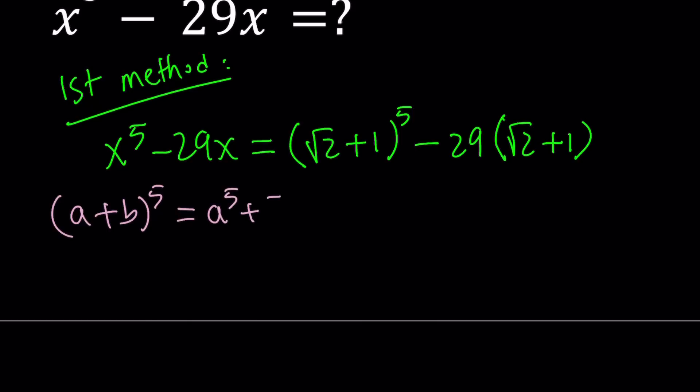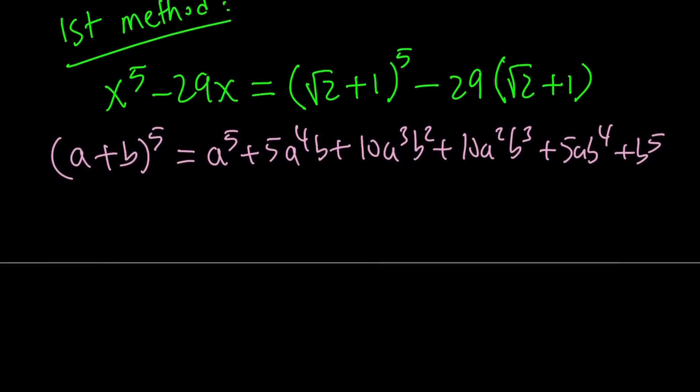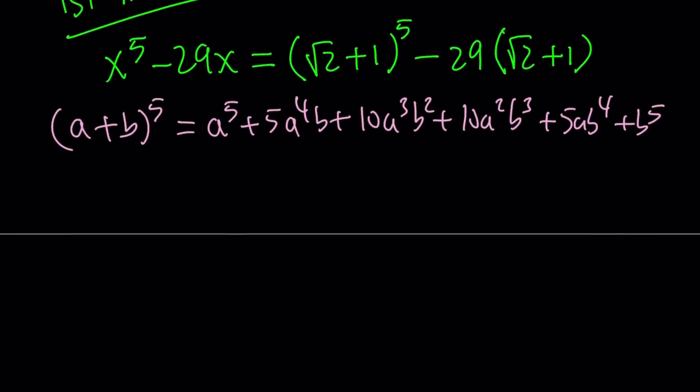So if you have a plus b to the 5th power, it's going to be a^5 + 5a^4b + 10a^3b^2 + 10a^2b^3 + 5ab^4 + b^5. Notice the symmetry in terms of powers and coefficients.